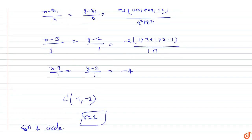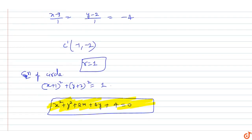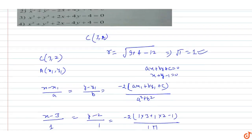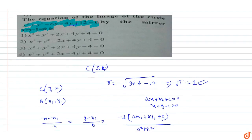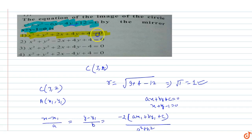So the equation of the image circle is x² + y² + 2x + 4y + 4 = 0. Option A is the correct answer. This is the equation of the image of the circle x² + y² + 2x + 4y + 4 = 0.